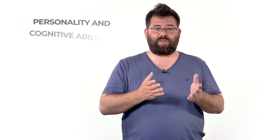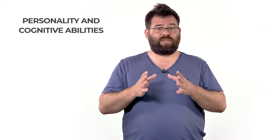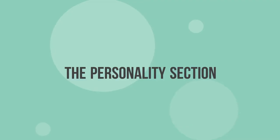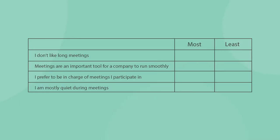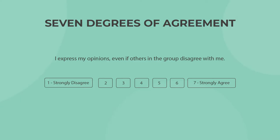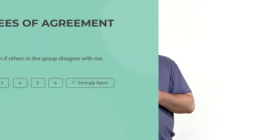As it assesses both personality and cognitive ability, the test has two sections, one for each topic. The items on the Caliper Personality section have two main forms. Some questions contain four statements and request you to choose the one statement that best or least reflects your beliefs. The other type will be formatted like seven degrees of agreement questions. Your answers to these questions will determine the personality portion of your score.